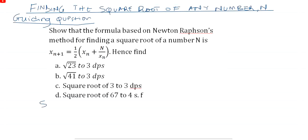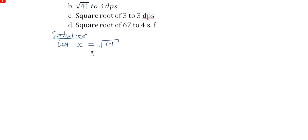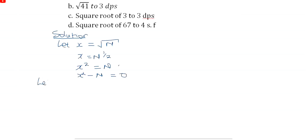First of all, in our solution, we have been given a number capital N, and we are going to find its root. We say let x, which is the root, be equal to the square root of capital N. If x is the square root of capital N, this implies that x equals N to the power of one half, from indices. Squaring both sides, x squared equals N, so x squared minus N equals zero. From here we set f(x) equal to zero, which implies f(x) equals x squared minus N.